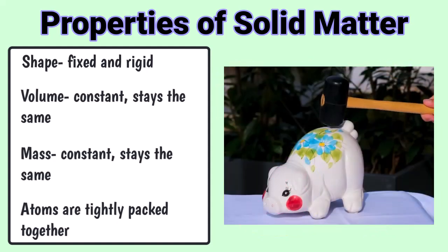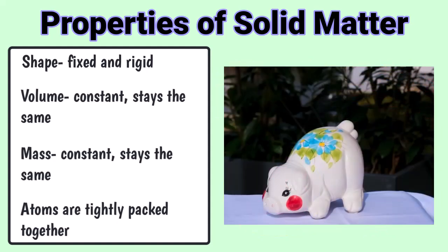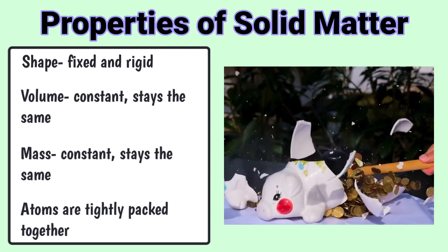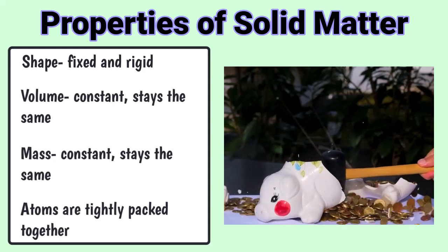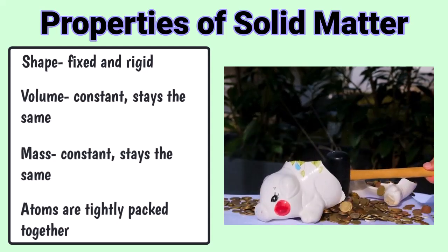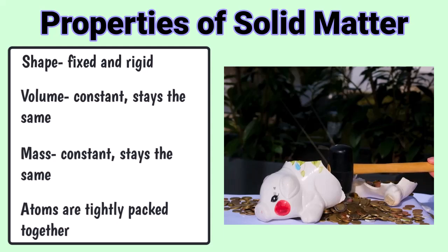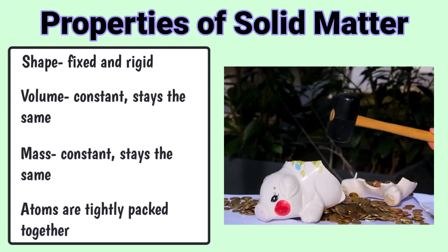A solid's shape, mass or volume will change only if external force is applied. Like in this example, the piggy bank is smashed into pieces, and so its original shape, volume and mass will be changed.